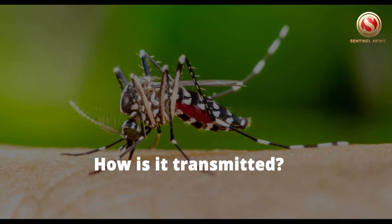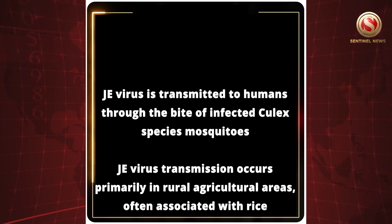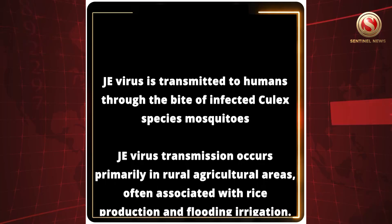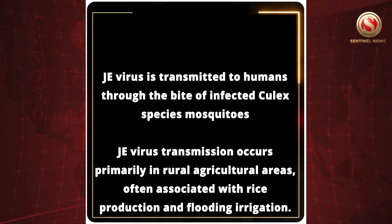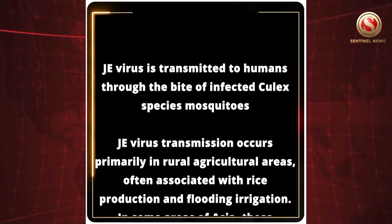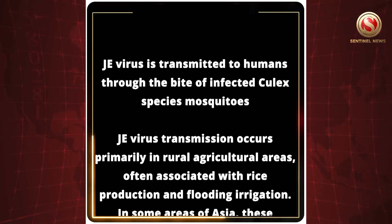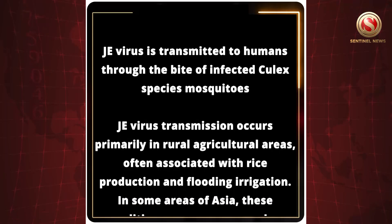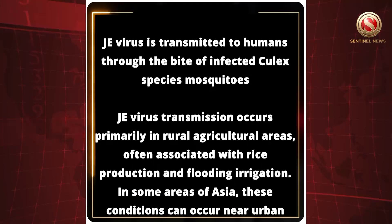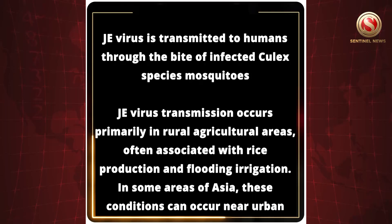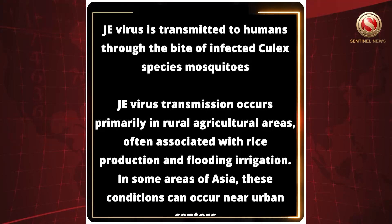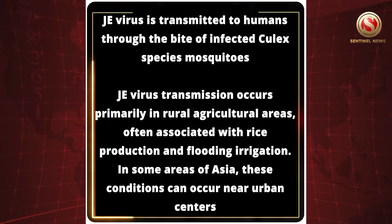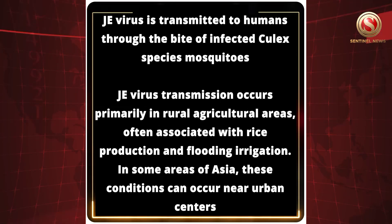How is it transmitted? Japanese Encephalitis virus is transmitted to humans through the bite of infected Culex species mosquitoes. Transmission occurs primarily in rural agricultural areas, often associated with rice production and flooding irrigation. In some areas of Asia, these conditions can occur near urban centers.